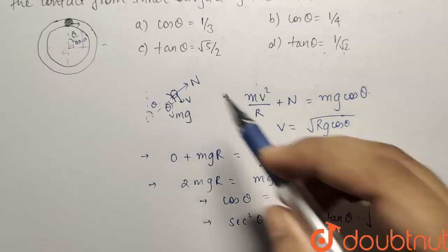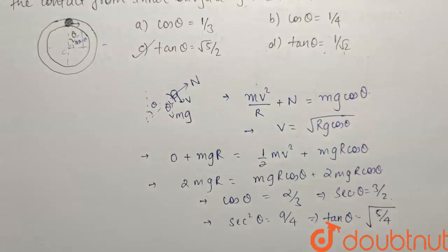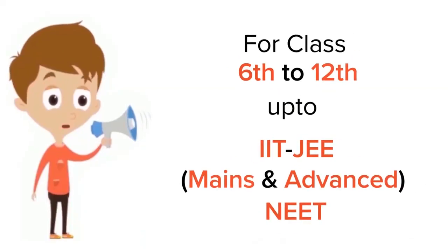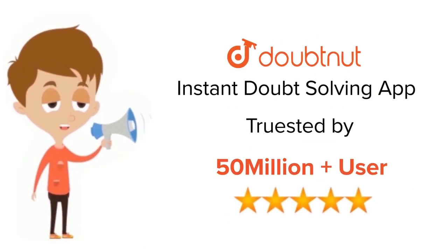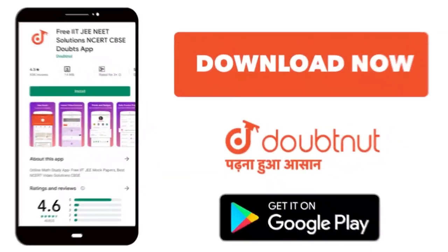If I have a look at the given options, option C, tan theta equals to under root 5 by 2 has to be the right answer. Thank you. For class 6 to 12, IIT-JEE and NEET Level. Trusted by more than 5 crore students. Download doubtnet app today.